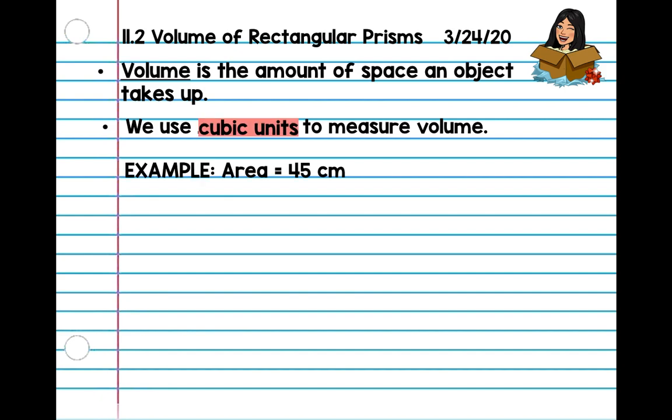For example, when we found the surface area of a rectangular prism yesterday, we always said centimeters squared, right? For example, the dimensions were 5 times 9, so that's how we got centimeters squared. When you are solving for volume, we use centimeters cubed because we are going to be multiplying three dimensions. And that's how we have cubic for three.